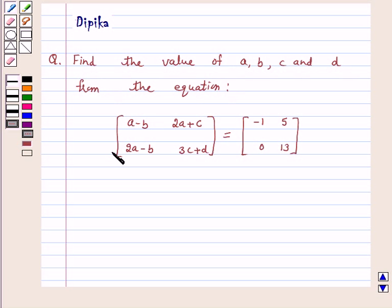C and D from the equation. A 2 by 2 matrix whose elements are A minus B, 2A plus C, 2A minus B, 3C plus D equals another matrix whose elements are negative 1, 5, 0, 13.